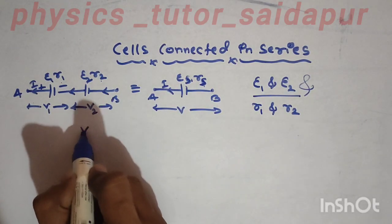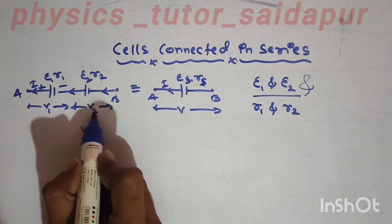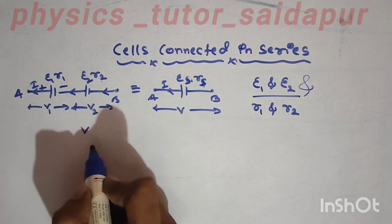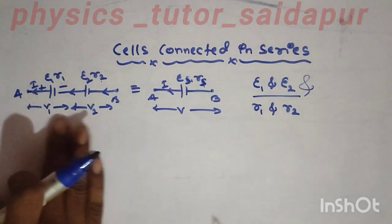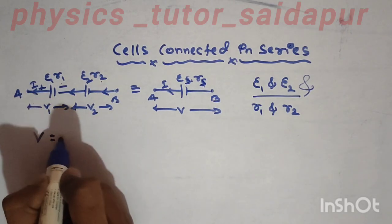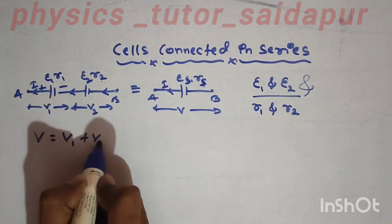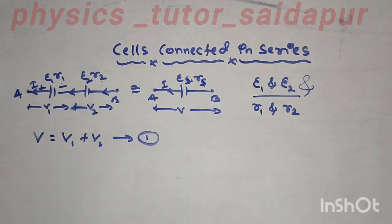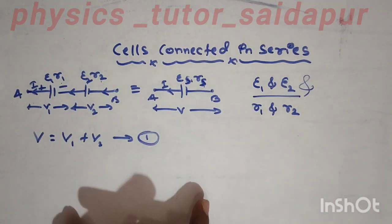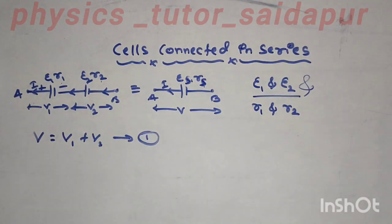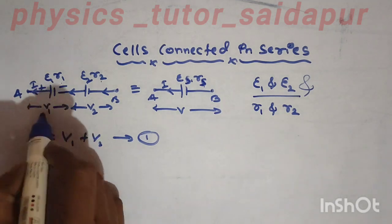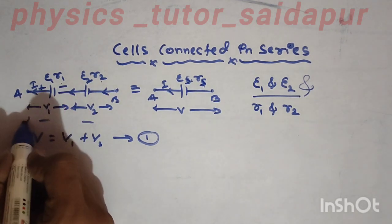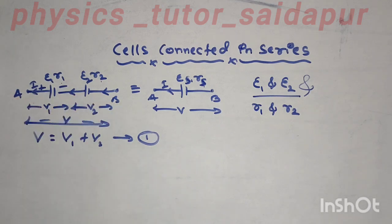Here the potential difference V equals V1 plus V2. We are considering a net potential difference, and we have to calculate the value of the two potentials, which equals the total potential.